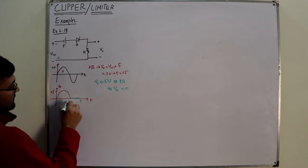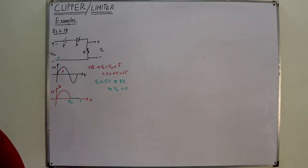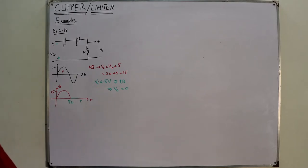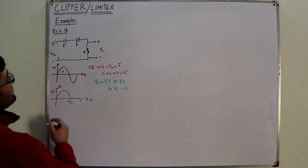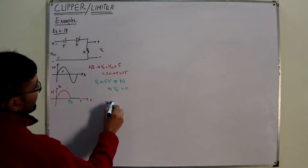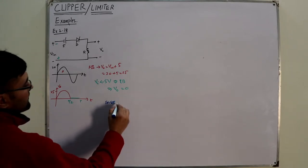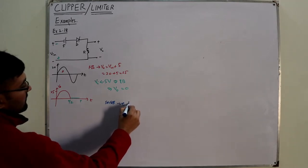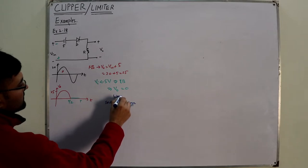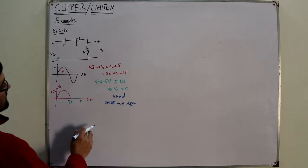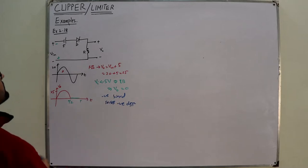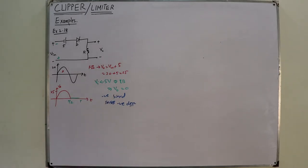Let me check from the book — yes, it's 25 volts and then zero volts. Now, what is the classification of this circuit? This is a series clipper. Is it a positive clipper or a negative clipper? It is a negative clipper. And is it biased? Yes, it is biased.